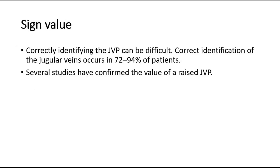For its sign value, correctly identifying the JVP can be difficult. Correct identification of the jugular veins occurs in 72–94% of patients. Several studies have confirmed the value of a raised JVP.